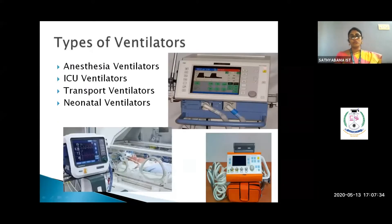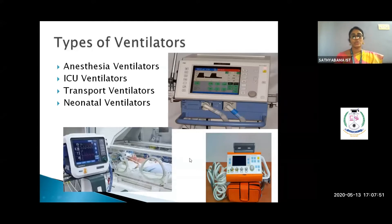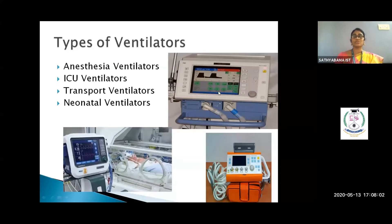Major types of ventilators include anesthesia ventilators, which are part of or connected beside the anesthesia machine, and ICU ventilators. ICU ventilators are primarily about settings — you must configure tidal volume, inspiration-to-expiration ratio, and other parameters using various controls.